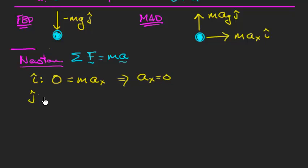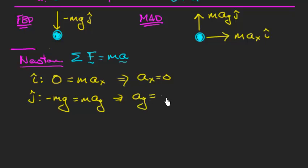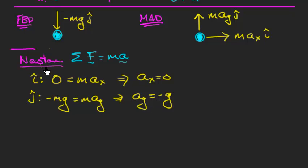In the j-hat direction, I have minus mg as my force, equal to m·ay. The mass cancels out, so ay equals minus g. That's completely expected. The textbook might start right here, but I like to go back and put things in the proper framework of engineering dynamics — drawing free body diagrams, mass acceleration diagrams — and actually derive these expressions from Newton's second law.